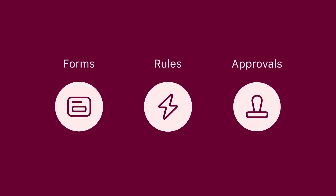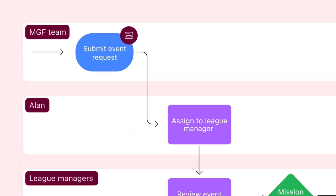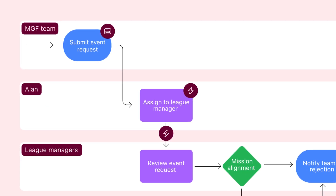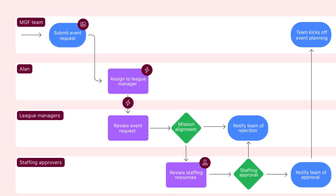Let's review Alan's description of the MGF event request process and identify which Asana features he can use to optimize it. Team reps submit requests through email and other channels. I always assign each one to the appropriate league manager for a review, and manually keep their status updated in my spreadsheet. Finally, requests go to our staffing team for approval.